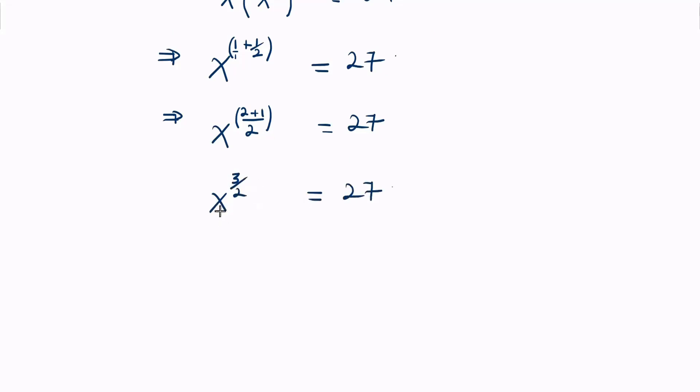Remember, we want to get the value of x. As we have x raised to power 3 over 2 equal to 27, to eliminate this power, let's multiply by the reciprocal of itself.